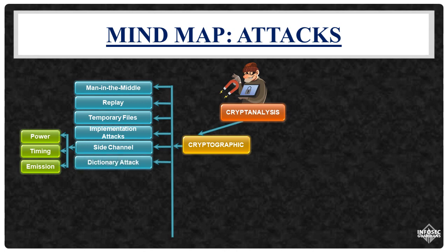Dictionary attacks are a form of brute force attack, prioritizing the most likely combinations over sequential attempts. Attackers often begin with common passwords like 'password' or 'ABCD@123'. Rainbow tables extend password dictionaries by storing hash values instead of plain text passwords. Attackers pre-compute hash values for common passwords, creating a database for quick comparison.